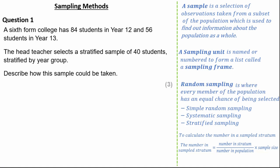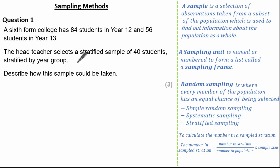Now let's look at a past exam question. A sixth form college has 84 students in Year 12 and 56 students in Year 13. The head teacher selects a stratified sample of 40 students, stratified by year group. We're asked to describe how this sample could be taken — it's worth three marks. See if you can give it a go.